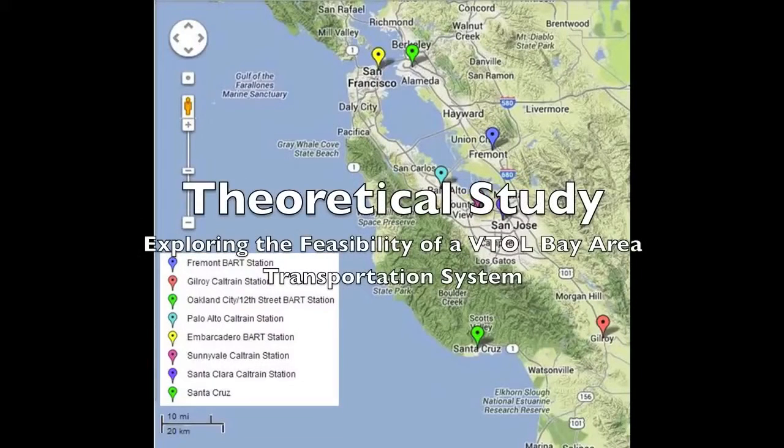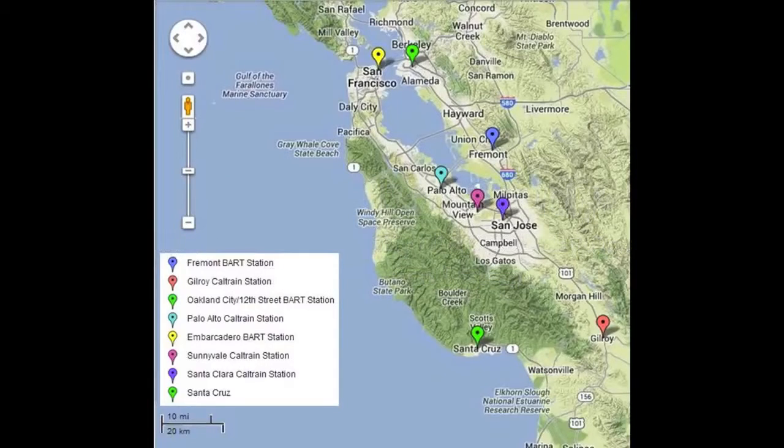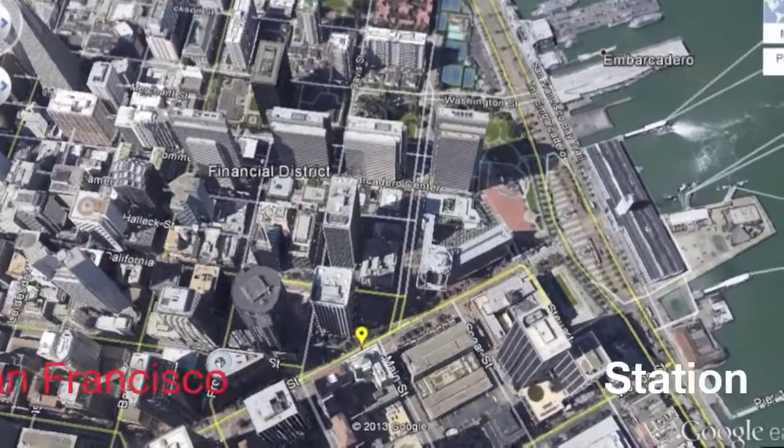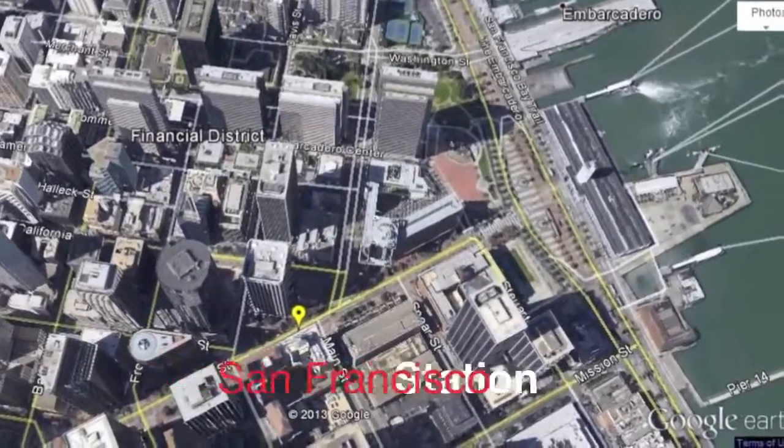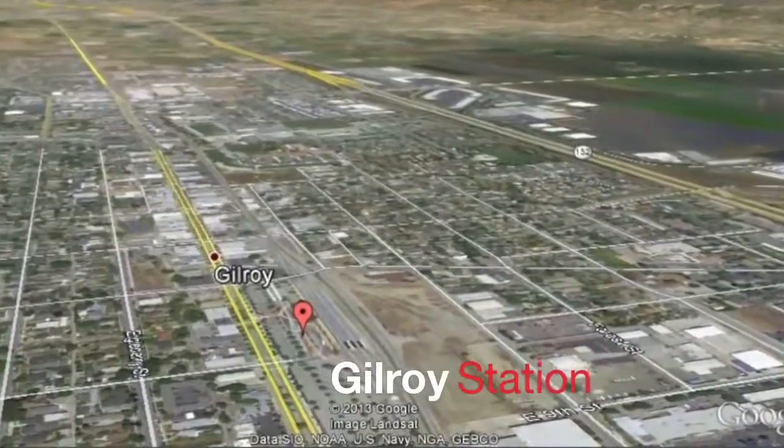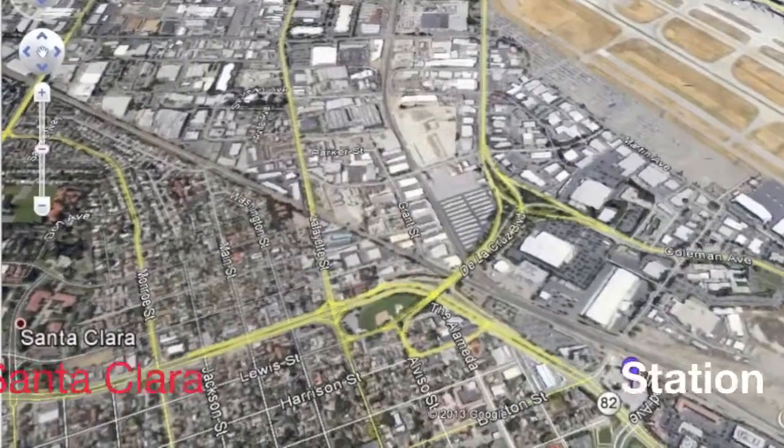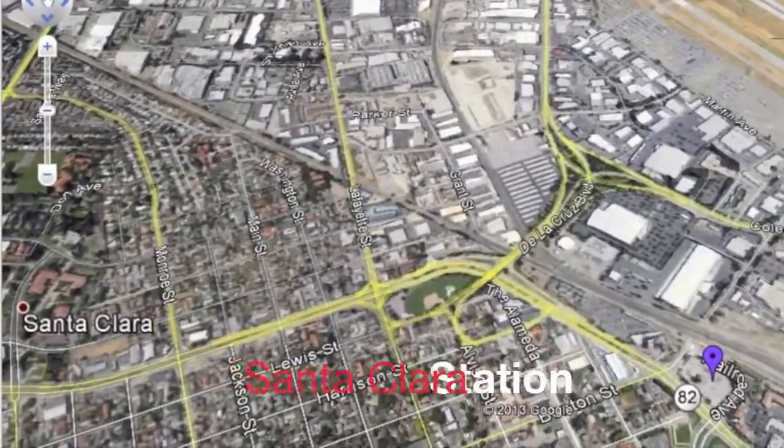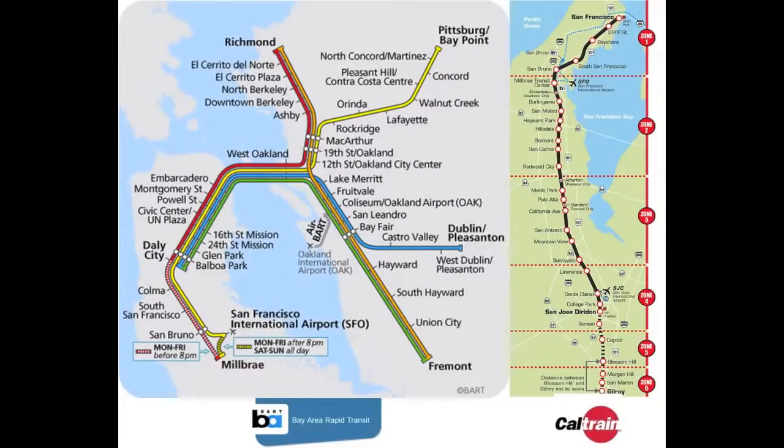The second major portion of the study involves the theoretical full-scale applications of our project. One of Raptor's major goals is to allow easy implementation of VTOL passenger aircraft into today's existing transportation systems. Eight major areas within the San Francisco Bay Area were selected as locations for our Vertiport stations. In order to augment the existing transportation systems, BART and Caltrain routes and ridership statistics were taken into account for these locations.